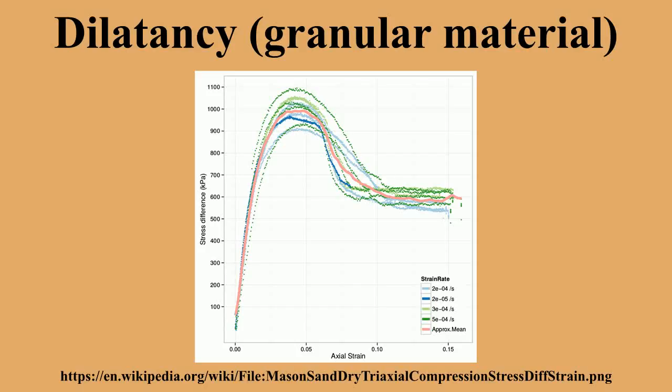On the other hand, when a granular material starts in a very loose state it may initially compact instead of dilating under shear. A sample of a material is called dilative if its volume increases with increasing shear, and contractive if the volume decreases with increasing shear. Dilatancy is a common feature of soils and sands.